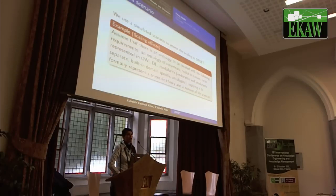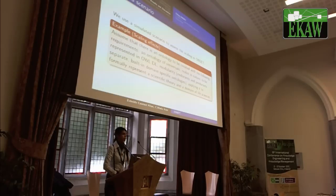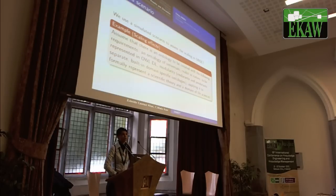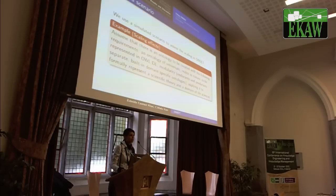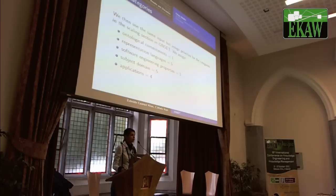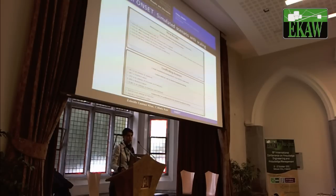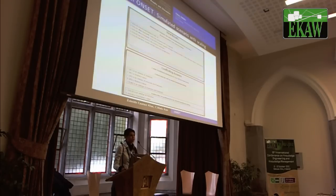We also assessed the scaling in Onset using a simulated scenario, with requirements for an ontology of universals, to be realist in nature, represented in LDL, modular, formally representing a scientific theory, in the domain of life sciences. Without scaling, Onset chose BFO. We then assigned scaling values to each category, and Onset now chose Dolce instead — demonstrating that scaling does make a difference, even when the criteria remain exactly the same.